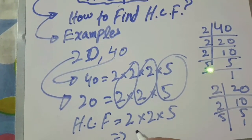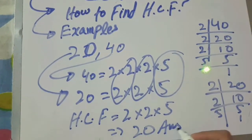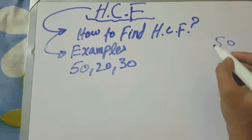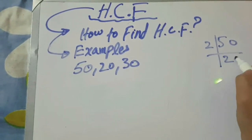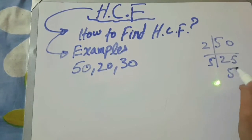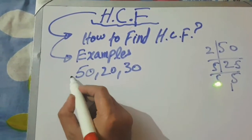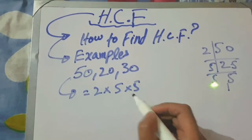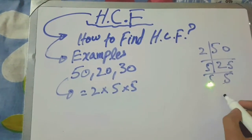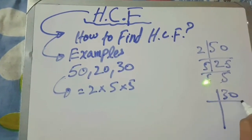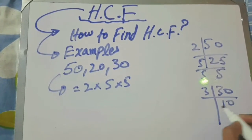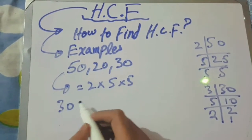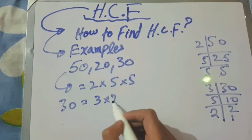Now the next example: 50, 20, and 30 — here we have three numbers. First take 2 as divisor for 50: 2 fives are 50, giving factors 2 multiplied by 5 multiplied by 5. Now for 30: 3 tens are 30, 5 twos are 10, and 2 ones are 2. The factors of 30 are 3 multiplied by 2 multiplied by 5.